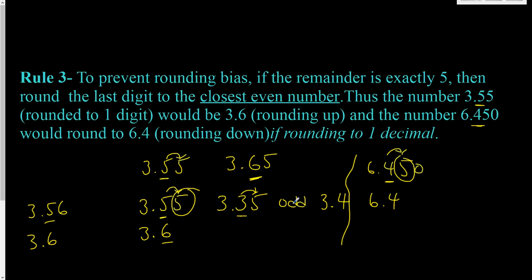And it's even, so we would leave it as is. In this rule, you end up doing this fifty percent of the time when you're looking at a five. Fifty percent of the time you're leaving your value, and fifty percent of the time you bump it. That should prevent rounding bias.